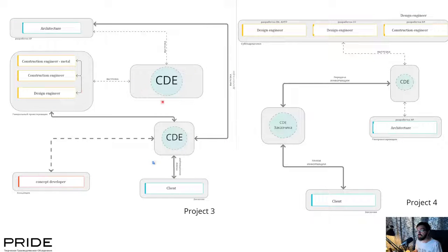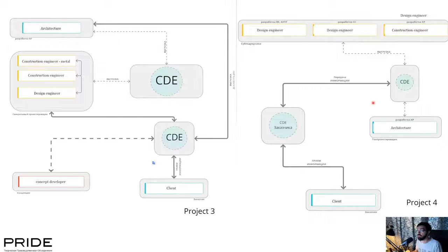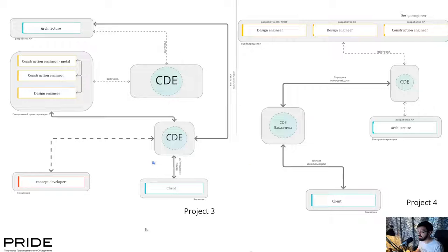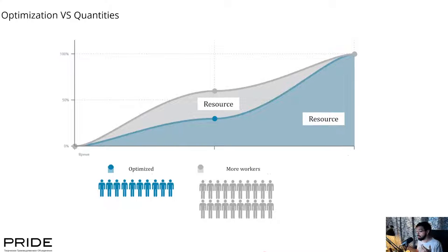On another project we have yet another situation: we are no longer general designers — here we are just contractors. We work for someone, but there is also a concept developer creating the conceptual part. On the right side we have a lot of different contractors — I'm showing just three here, but actually there are sixteen. Try to understand what you need to do to make rules for sixteen different contractors. It's really hard.